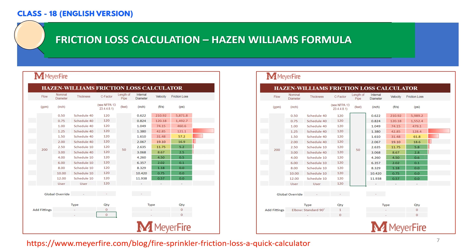I hope you understand the concept of friction loss calculation using the Hazen-Williams formula. In the next classes we shall go through various types of sprinklers such as CMDA sprinklers. Till then, have a good day, bye.